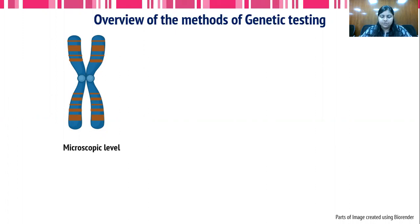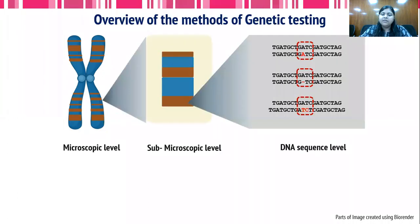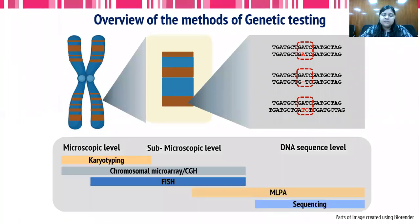These methods have different resolutions. There could be methods which detect aberrations at the microscopic level, at the sub-microscopic level, and at the DNA sequence level. There are several techniques which are specialized for detecting aberrations at these different levels.